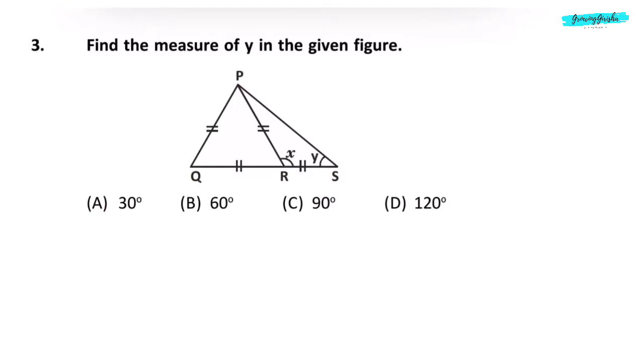Question 3. Find the measure of Y in the given figure. PQR is an equilateral triangle, means all the angles in triangle PQR are 60 degrees. Now, X plus Y plus Y is equal to 180 degrees. X here is 180 minus 60 degrees, which is 120 degrees. So Y is equal to 180 minus 120 divided by 2. 60 degrees divided by 2 is 30 degrees. Your answer is 30 degrees, option A.